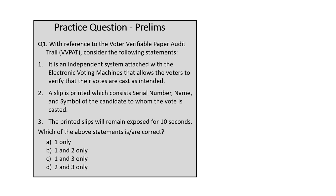The first practice question is on VVPAT, asking for correct statements. Statement 1 — it is an independent system attached with EVMs that allows voters to verify that their votes are cast as intended — is correct. Statement 2 — a slip is printed which consists of serial number, name and symbol of the candidate — is also correct. Statement 3 — the printed slips remain exposed for 10 seconds — is wrong, as they remain exposed for only 7 seconds. Eliminating statement 3, the correct answer is B: 1 and 2 only.